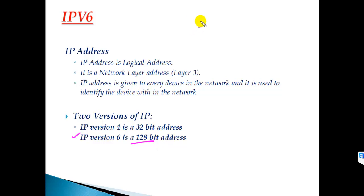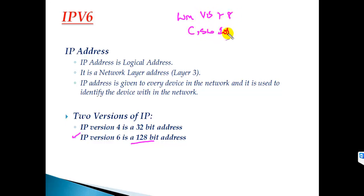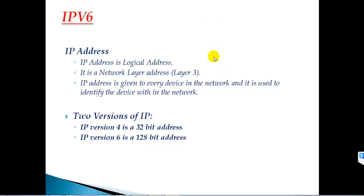IPv6 has been made mandatory — new operating systems coming into the market, starting from Windows Vista, Windows 7, Windows 8, and new Cisco IOS versions all by default support all IPv6 options. Every device nowadays is capable of identifying and understanding IPv6 addressing, so as network engineers we also need to have very good foundations in IPv6. In this section we'll be getting into much more detail about IPv6 from the basics.